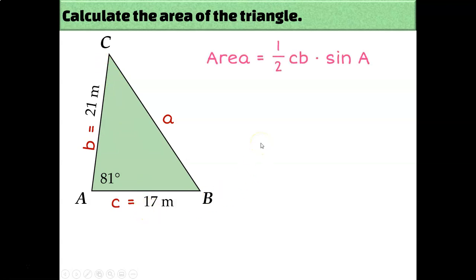And the formula for the area of a triangle using trigonometry is one-half times c times b times the sine of A. So let's just fill in our numbers. c is 17, b is 21, and the sine of A, that would be the sine of 81. So type that into the calculator, and round to the nearest tenth, and we find out that the area of this triangle is approximately 176.3 square meters. Easy peasy.